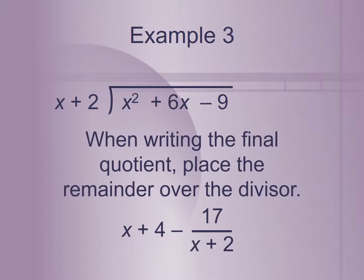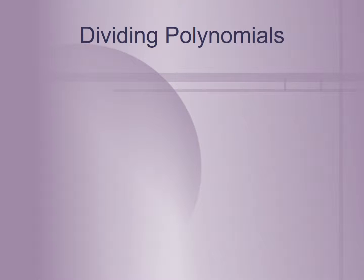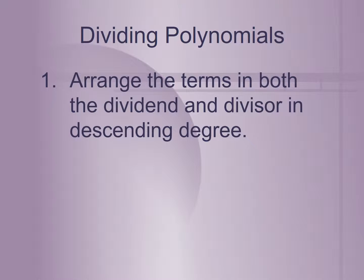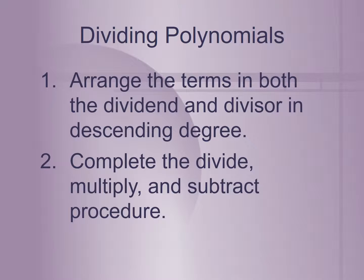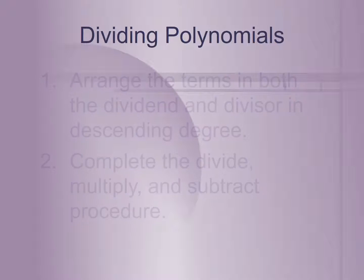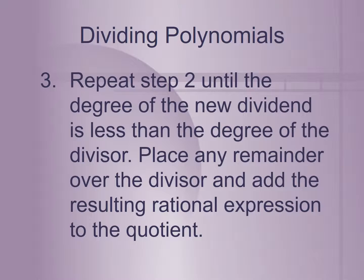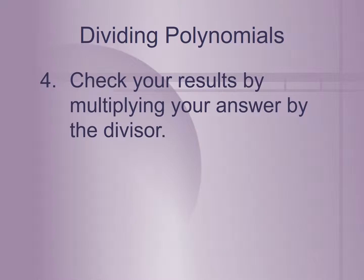When writing our final answer, called the quotient, we take the remainder and put it over the divisor. Our remainder was negative 17, so we write negative 17 over x plus 2. The steps to divide polynomials are: arrange terms in descending degree, complete the divide-multiply-subtract procedure, and repeat until the degree of the new dividend is less than the degree of the divisor. You can also check your answer by multiplying the quotient by the divisor.